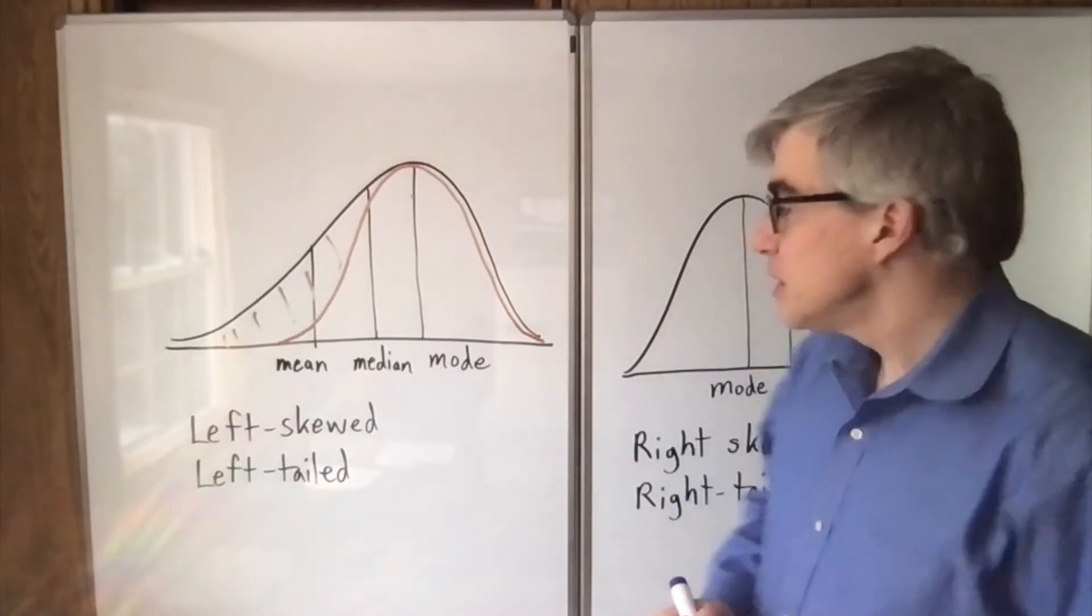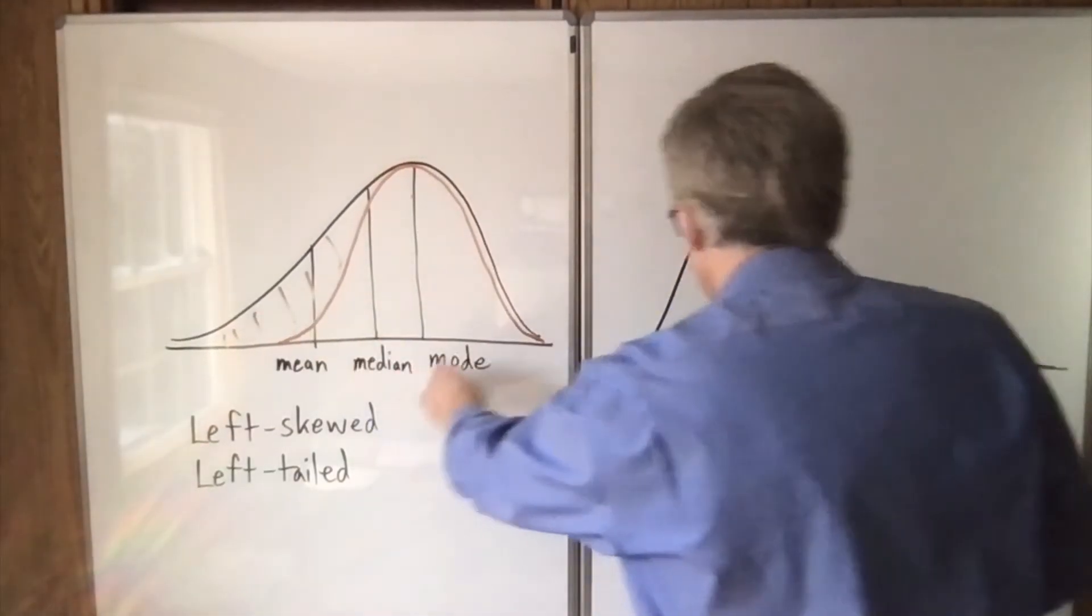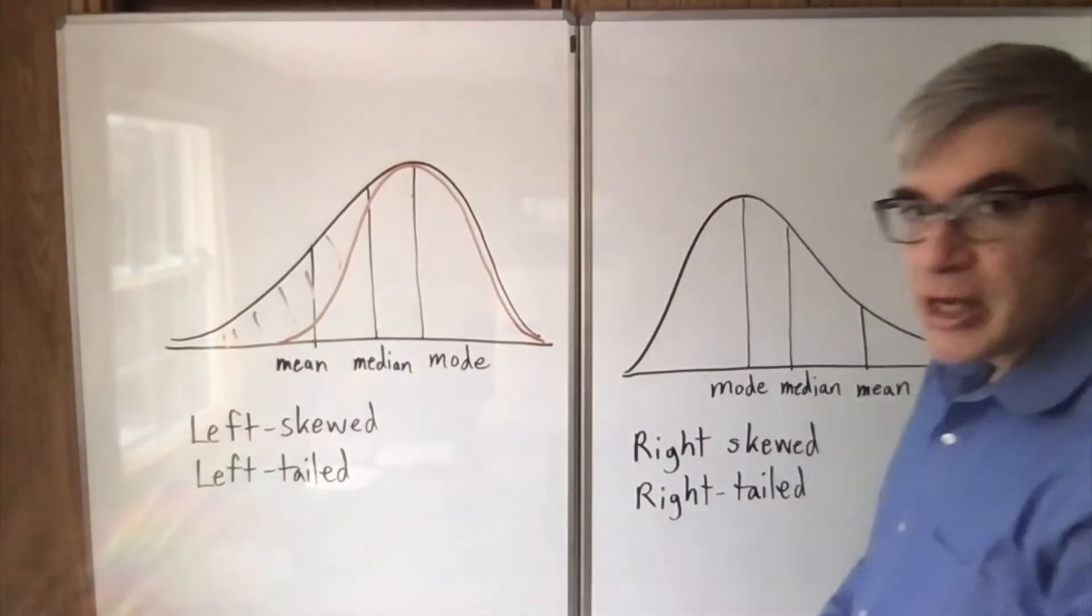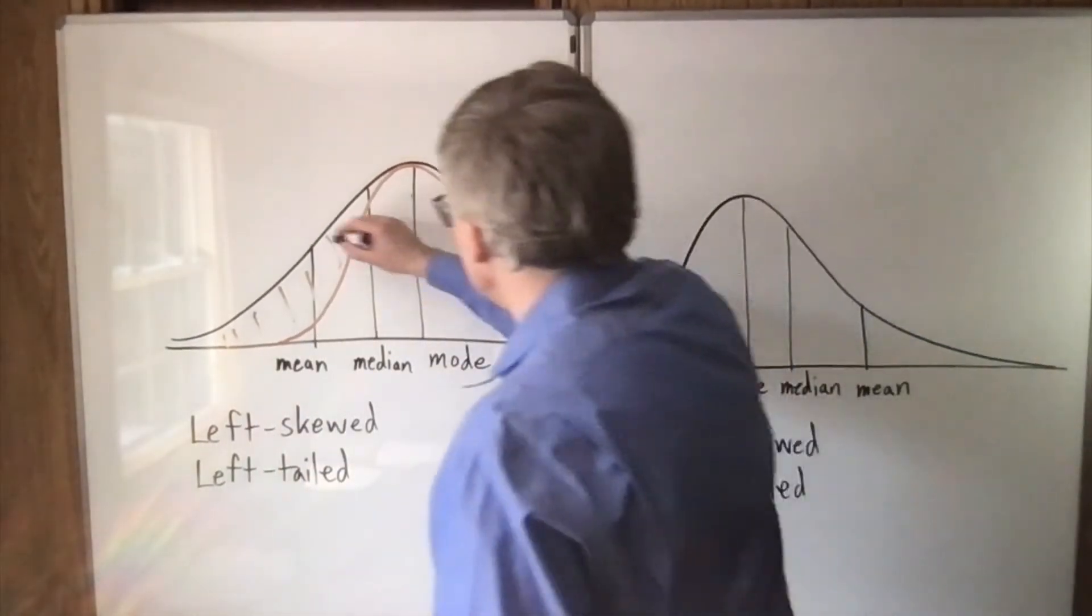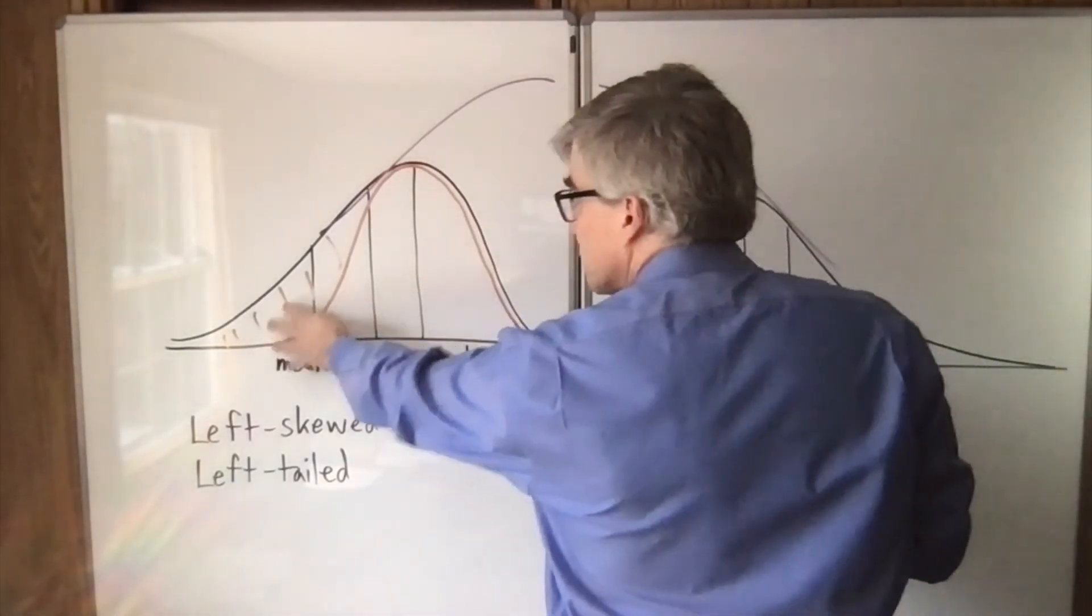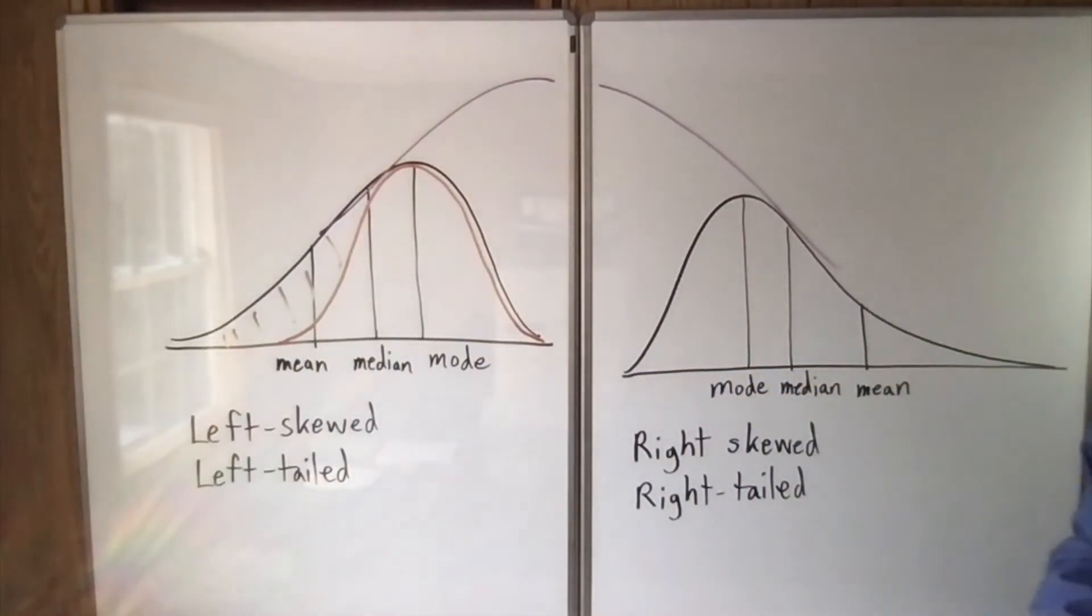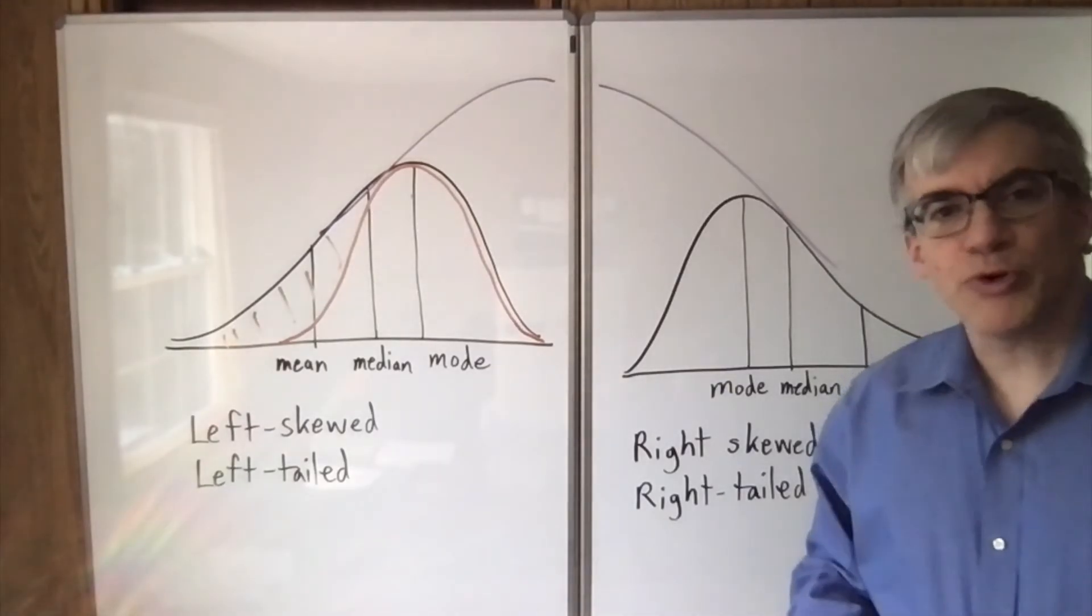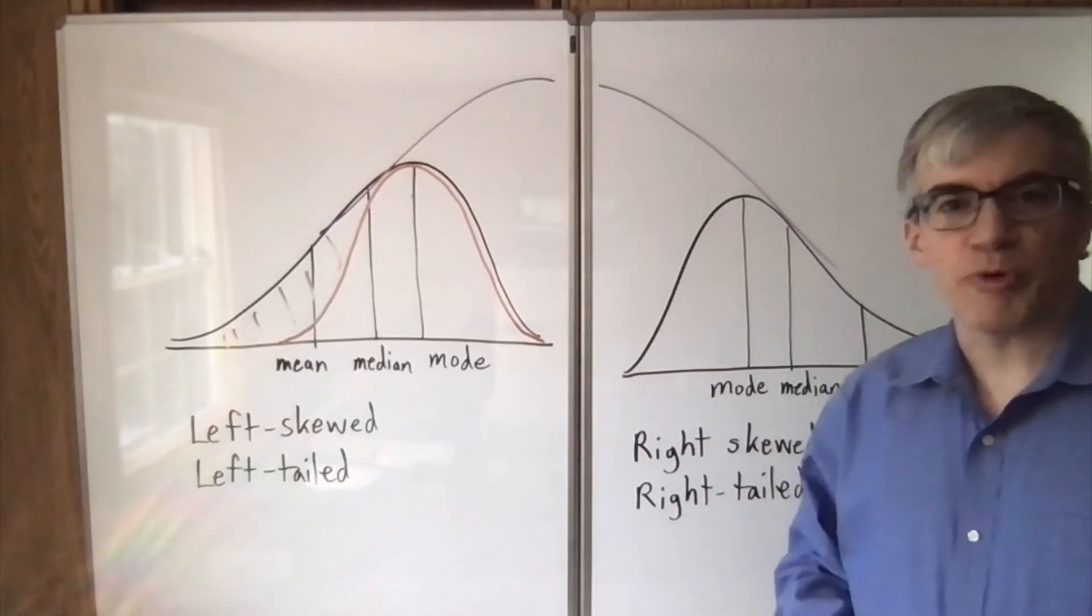One more mnemonic. We have a left skewed distribution here, a right skewed distribution here. If you imagine mushing them together into one gigantic bell curve, the left skewed part is on the left. The right skewed part is on the right. So use whichever version is most helpful for you to memorize it.